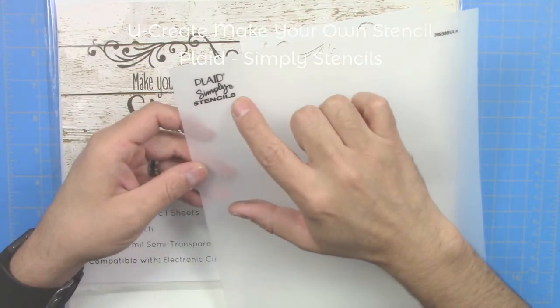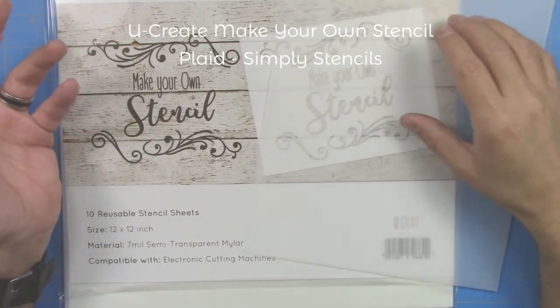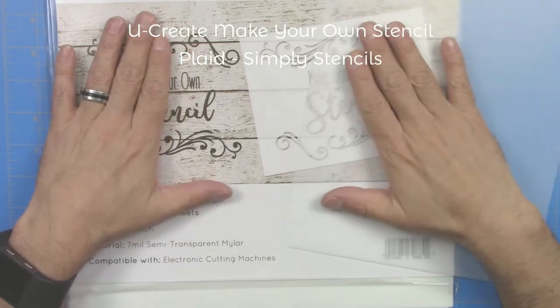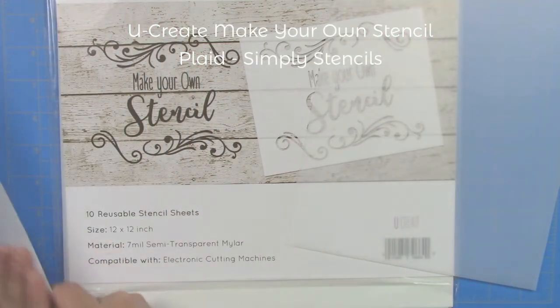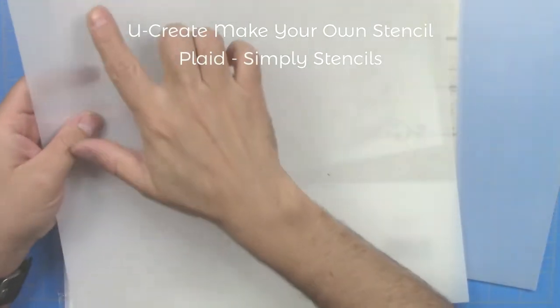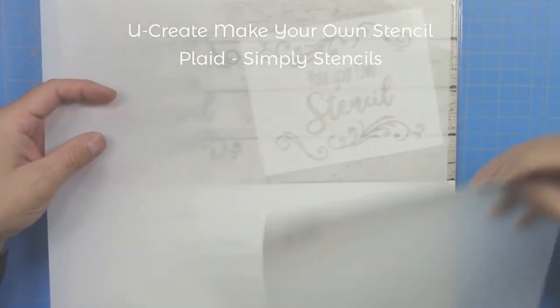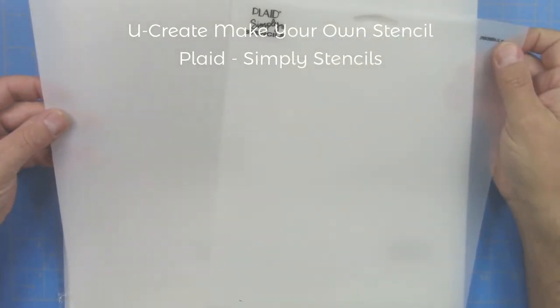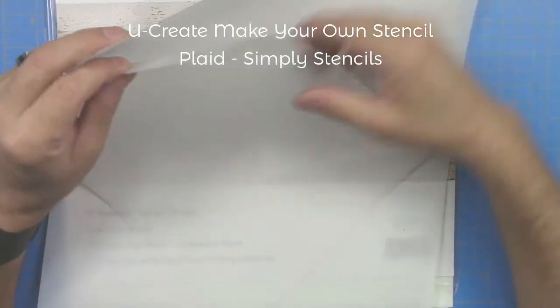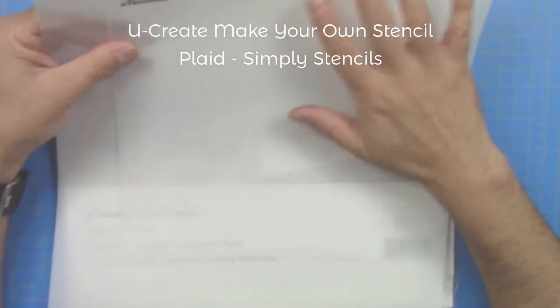Now my two favorite brands are the U-Create make your own stencil and the Plaid simply stencils. They are both thicker than the other two materials and they are also frosted but very transparent. The Plaid material is a little bit thicker than the U-Create brand but it's also a little bit more transparent than this one.